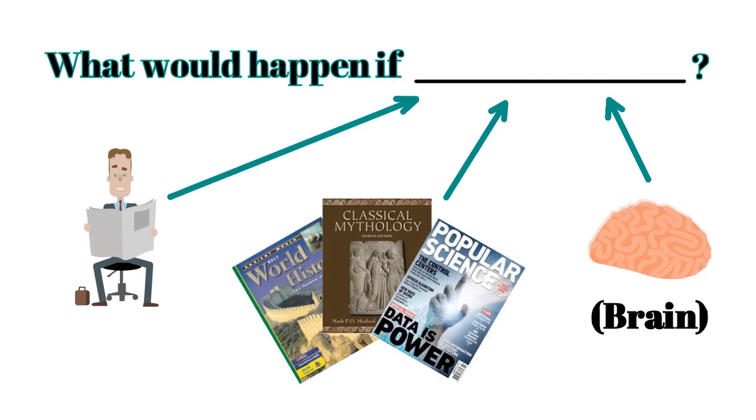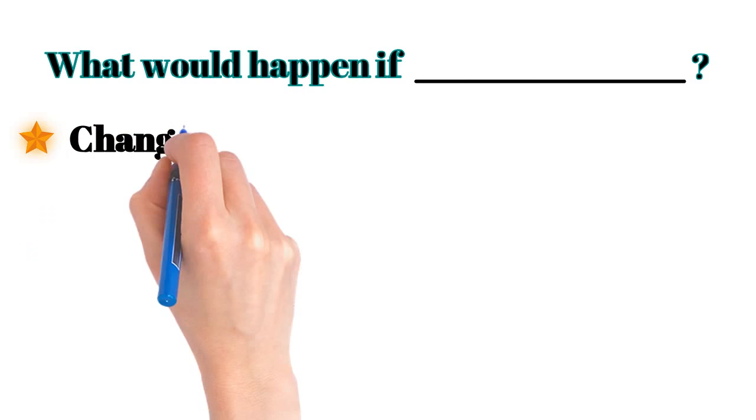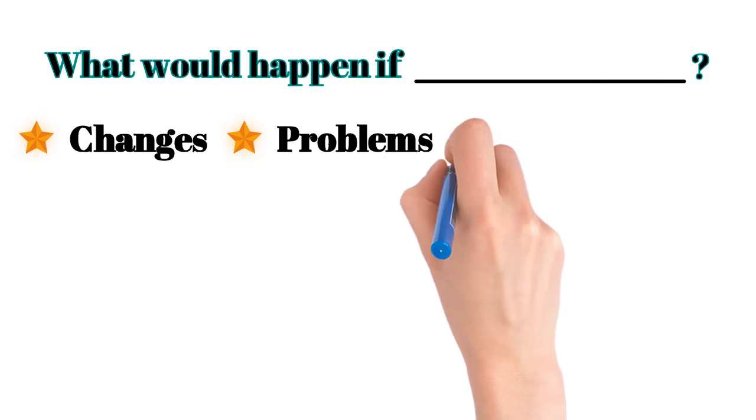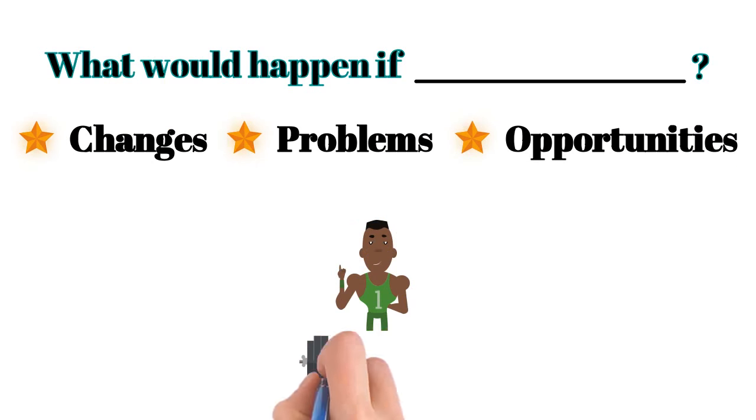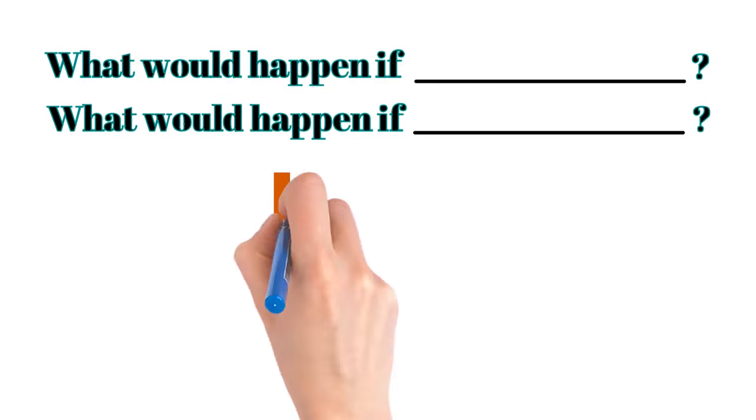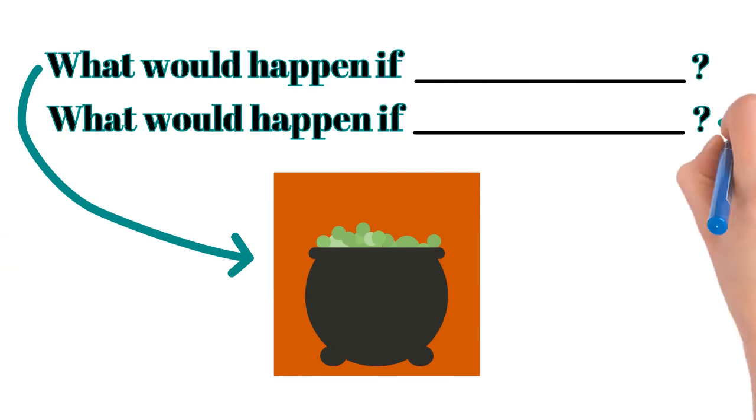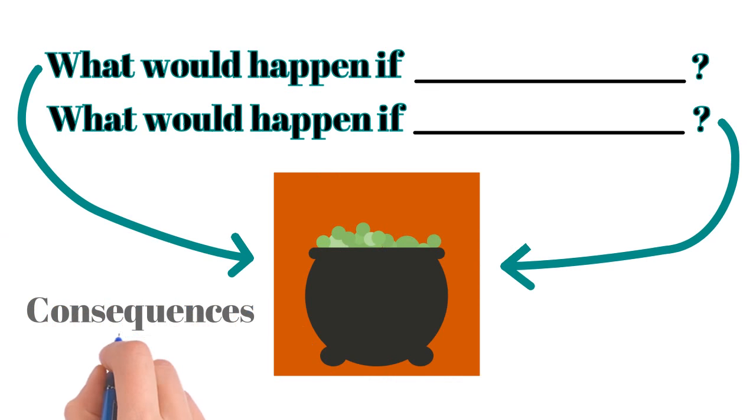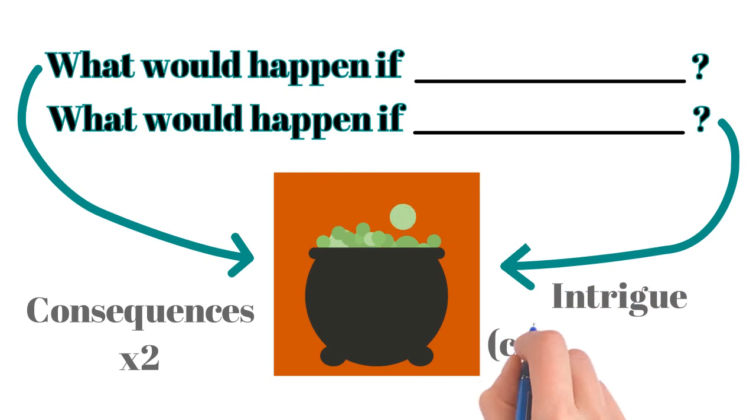The next step is to write down all of the possible consequences of this idea and look for the one that really piques your interest. Now you've got something cool. But maybe it's not quite good enough yet. So do the technique again, and mix the two ideas. Now you've doubled the consequences, and hopefully doubled the intrigue.